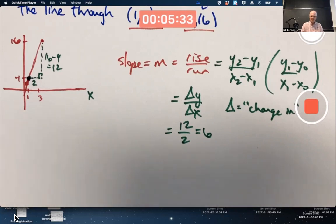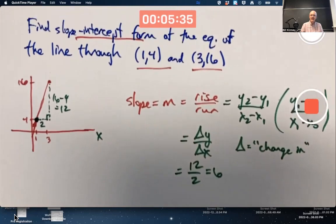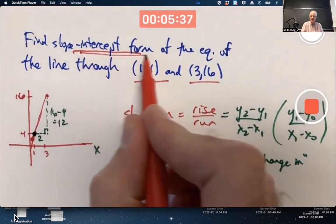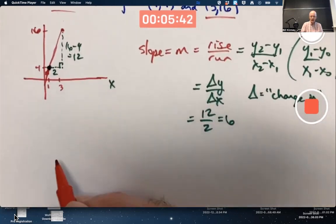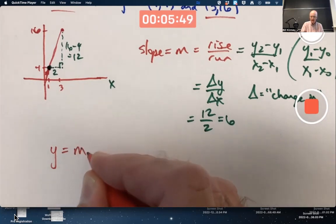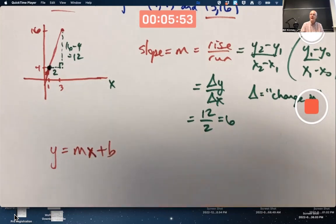But that's not all, right? We need the equation, the slope-intercept form of the equation of the line. We need the y-intercept as well. We know the equation of a line in slope-intercept form is y equals mx plus b. We've already found m. That gets plugged in there. Now find b.